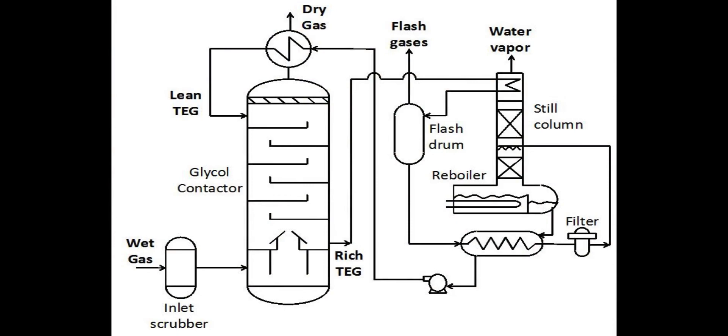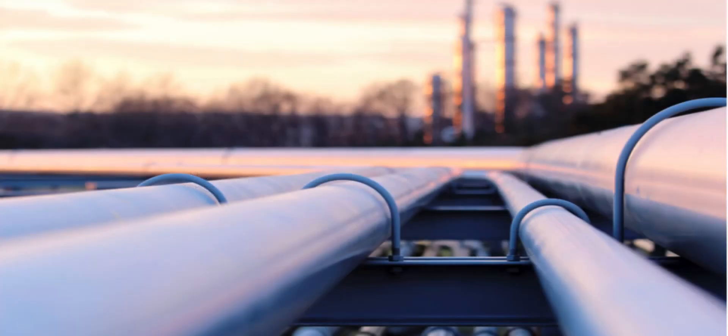One, by heating the lines the gas is traveling through. A second, by dehydrating the gas from water molecules. And a third, by utilizing chemical inhibitors such as methanol to lower the hydrate formation temperature of the gas. All of these techniques have the goals of reducing safety risks from blocked lines and improving gas flow.